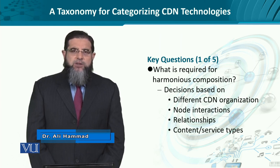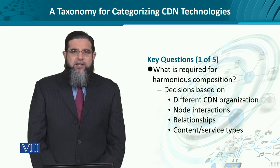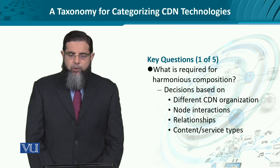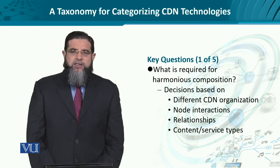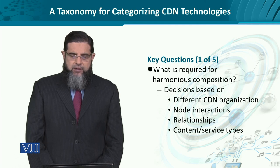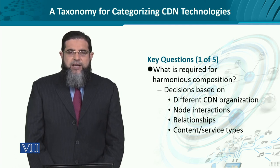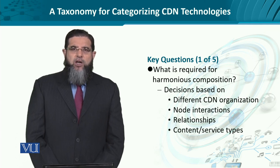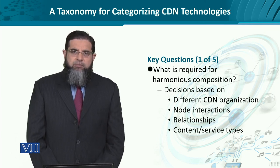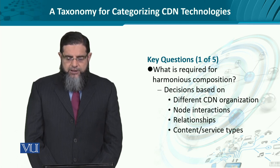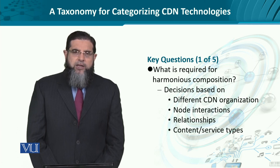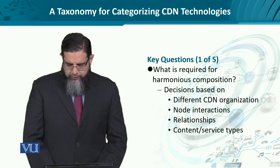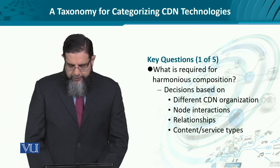The fundamental question for CDNs is: what is required in order to provide a smooth and harmonious composition of content? This particular decision is based on the CDN organizations — we just mentioned Netflix and Hulu — and then the interaction of the nodes or network elements which these CDN organizations name and use, and their relationships. And what exactly is the content? Audio, video, multimedia, all text, or a file to be downloaded and then played.